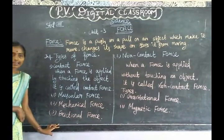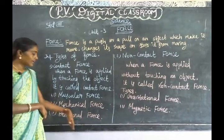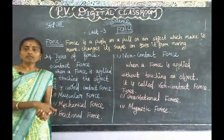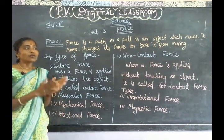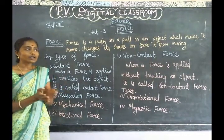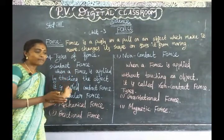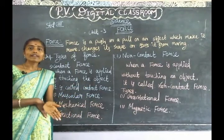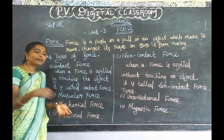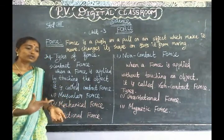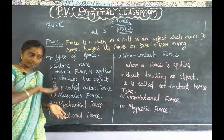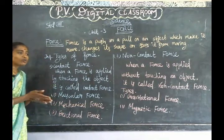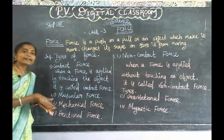Next is frictional force. Frictional force is the force applied when an object moves on a surface. For example, if you play a ball and throw it, the ball rolls on the surface. Similarly, in a carom board, the coin slides on the surface — the force produced is frictional force.